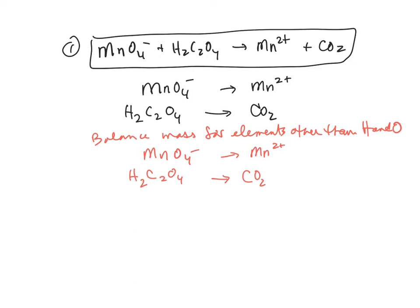So we're going to balance the mass. So we're looking at the manganese. The manganese is balanced. The second half reaction, the carbon is not balanced. So you need to put a 2 there to balance that.